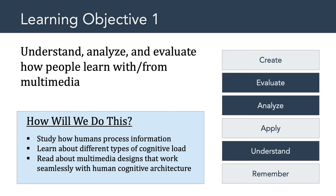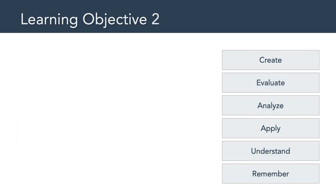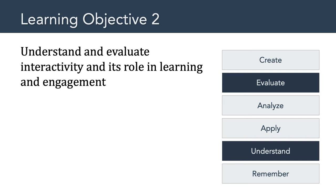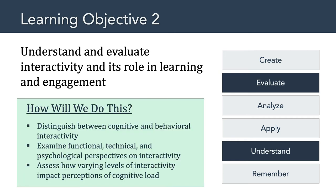Our second learning objective states that we will understand and evaluate interactivity and its role in learning and engagement. We're going to distinguish between cognitive and behavioral interactions, examine functional, technical, and psychological definitions of interactivity, and assess how varying levels of interactivity impact perceptions of cognitive load.